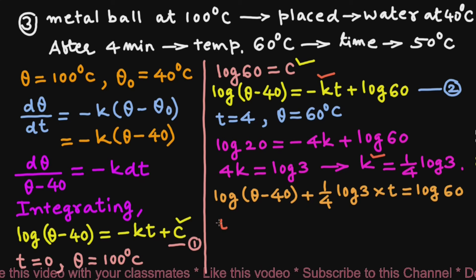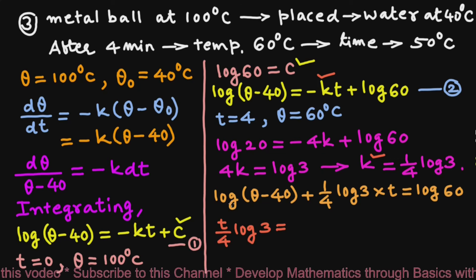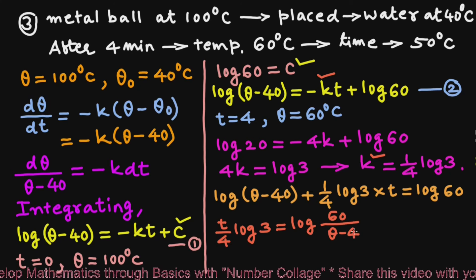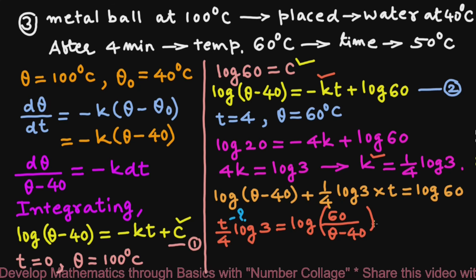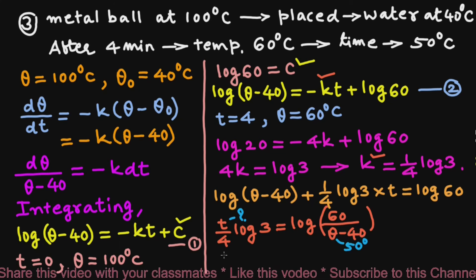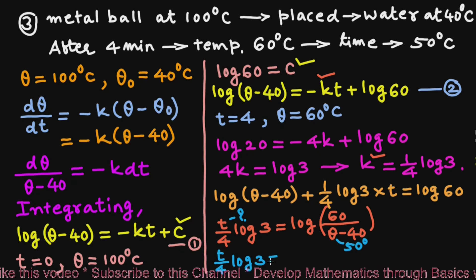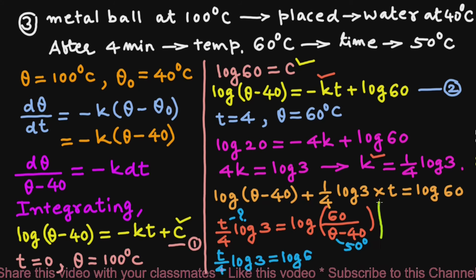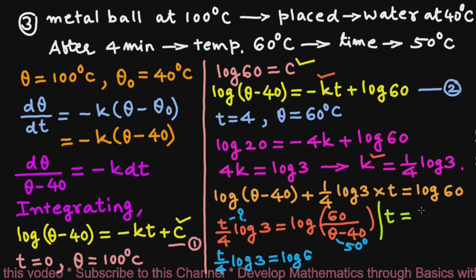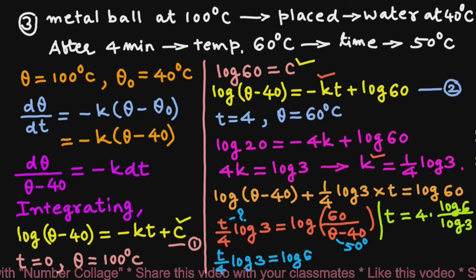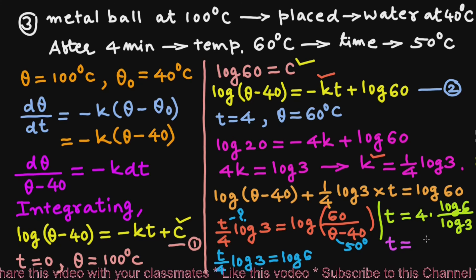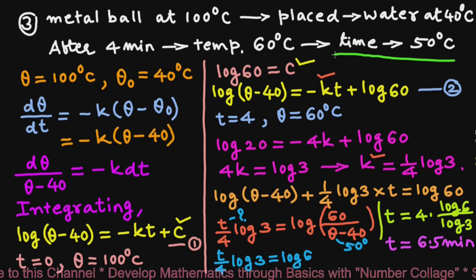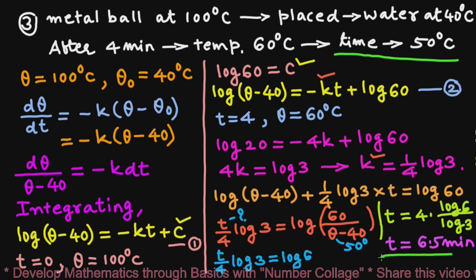Rearranging: (t/4) log 3 = log 60 − log(θ − 40) = log(60/(θ − 40)). We have to find t when θ = 50°C. So (t/4) log 3 = log(60/10) = log 6, giving t = 4 · log 6 / log 3 = 6.5 minutes. The temperature of the ball will drop to 50°C after 6.5 minutes.